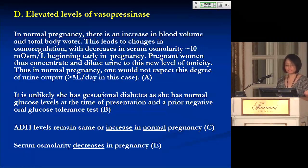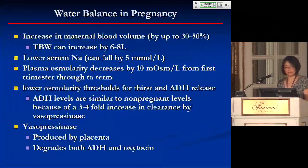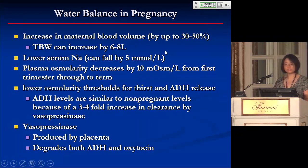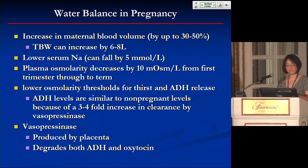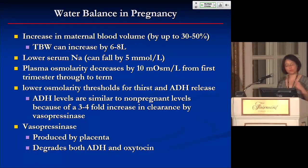ADH levels in normal pregnancy actually remain about the same or slightly increased. With the decrease in serum osmolarity, serum sodium can fall by 5 mmol/L in normal pregnancy, with a lower threshold for thirst and ADH release. ADH levels are often similar to non-pregnant levels because even if ADH increases, there is a compensatory three-fold increase in clearance by vasopressinase — an enzyme produced by the placenta.